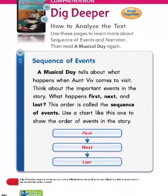Comprehension. Dig deeper. How to analyze the text. Use these pages to learn more about sequence of events and narrator. Then read the music day again. Sequence of events: A Music Day tells about what happens when Aunt Viv comes to visit. Think about the important events in the story. What happens first, next, and last? This order is called the sequence of events. Use a chart like this one to show the order of events in the story.